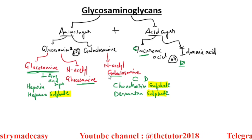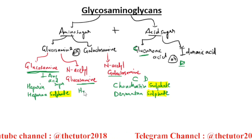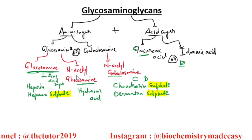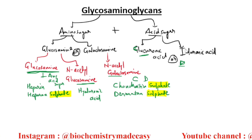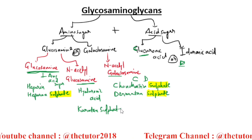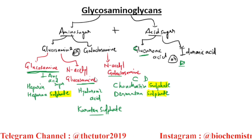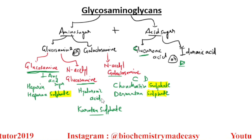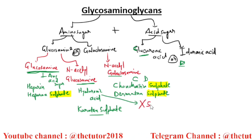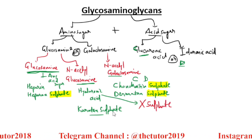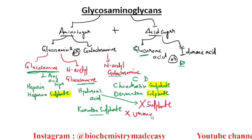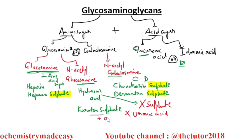N-acetyl glucosamine with glucuronic acid makes hyaluronic acid. Note that hyaluronic acid does not contain sulfate. Keratan sulfate is made up of N-acetyl glucosamine but does not contain any uronic acid; instead, it contains galactose.